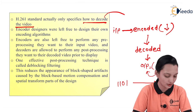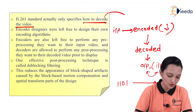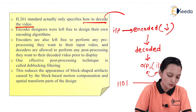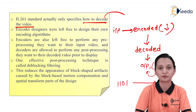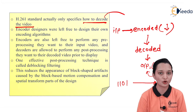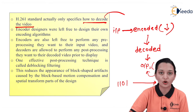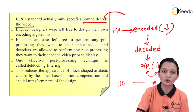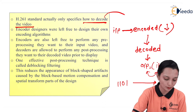Encoder designers are left free to perform any pre-processing they want on their input video. Decoders are allowed to perform any post-processing they want on their decoded video prior to display. Whatever algorithm the encoding technique wants to use, they are free to use. Similarly, to decode the encoded output, whatever techniques H.261 wants to use, they are also free to use.